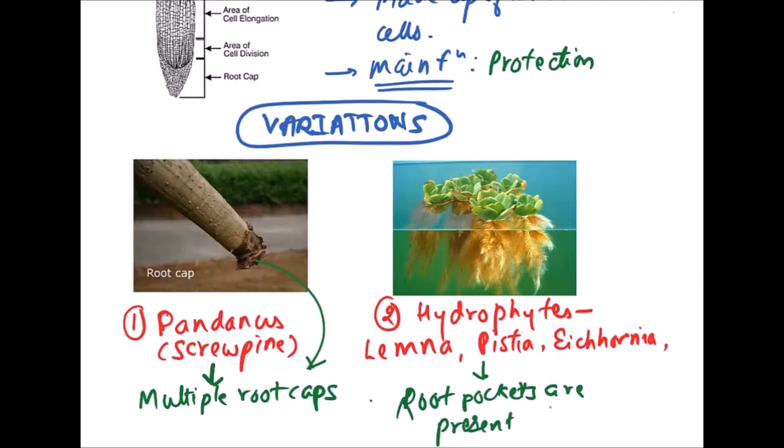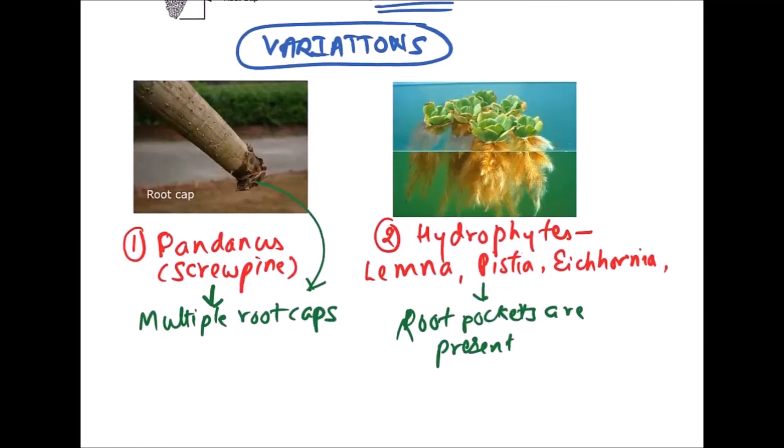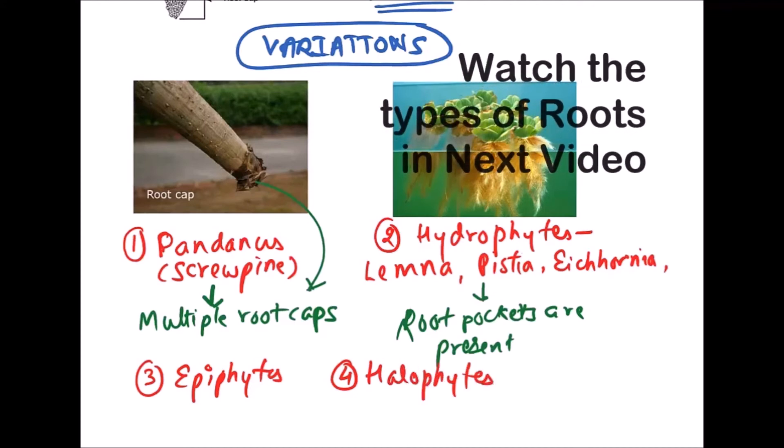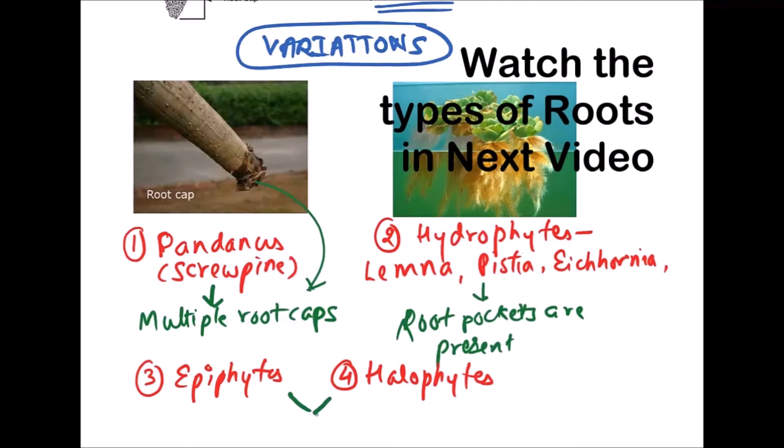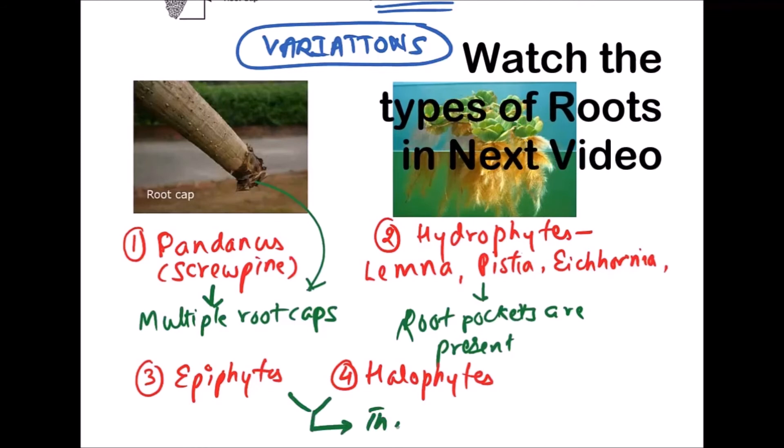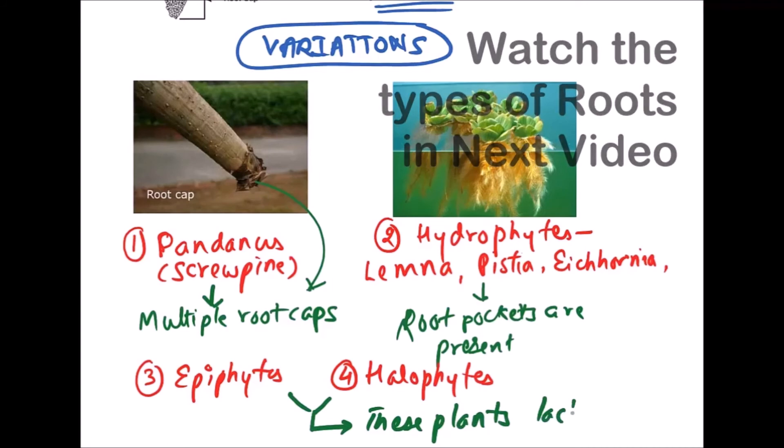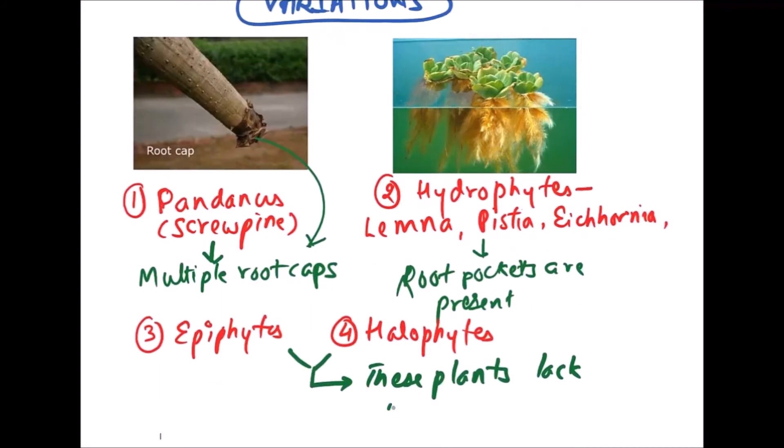Now further, there are some plants that lack root caps. For example, epiphytes and halophytes. Halophytes include mangroves, so these plants lack root cap.